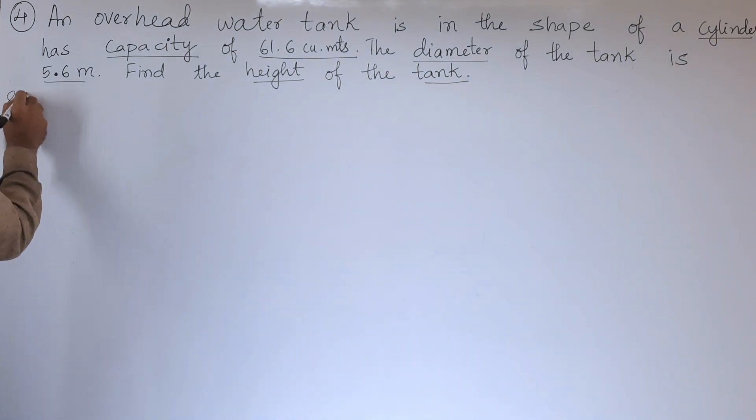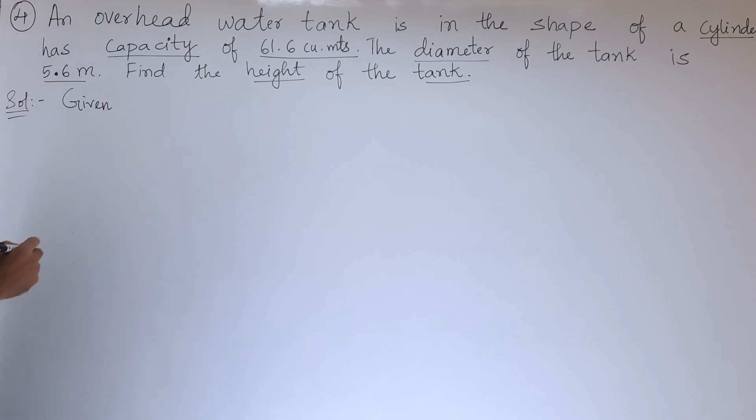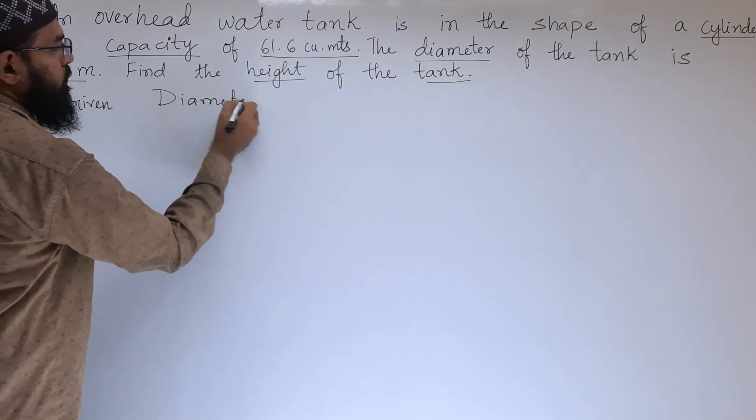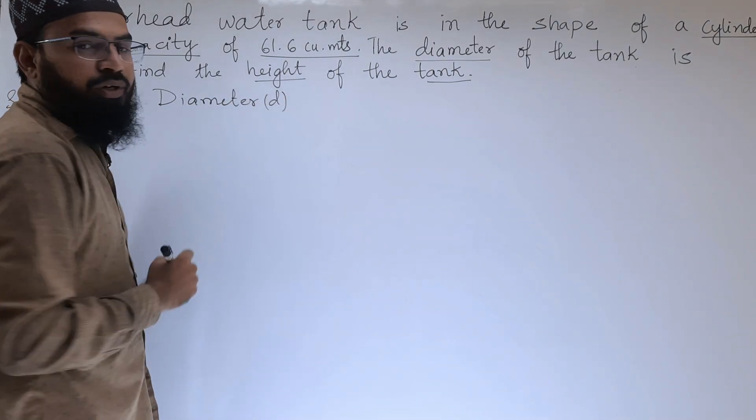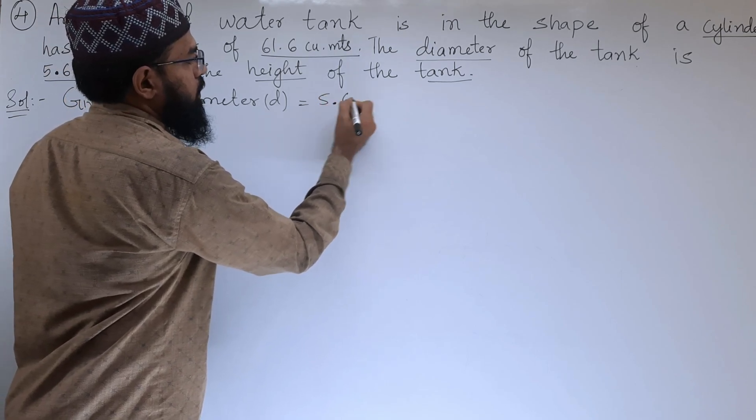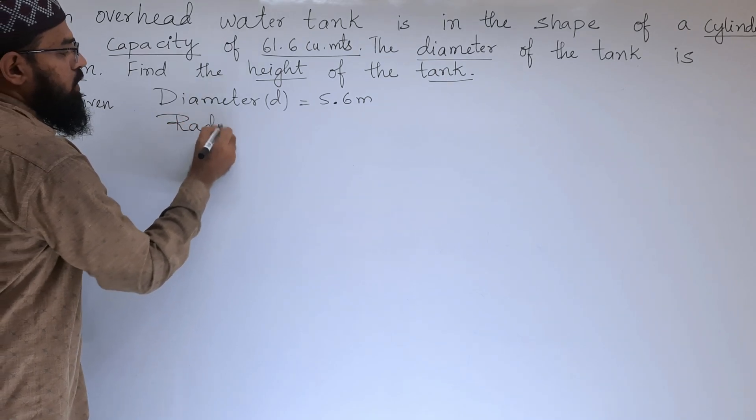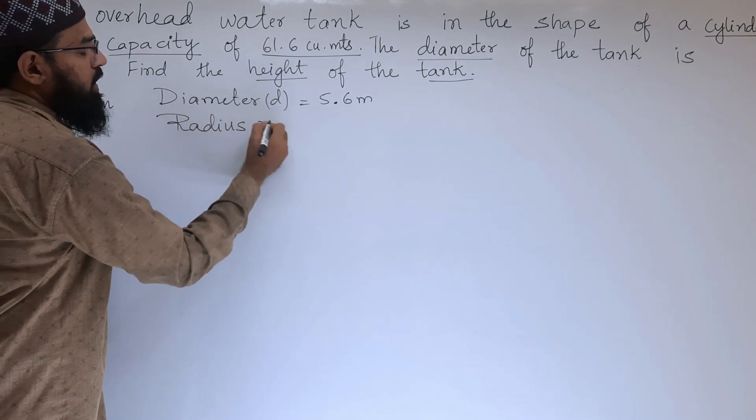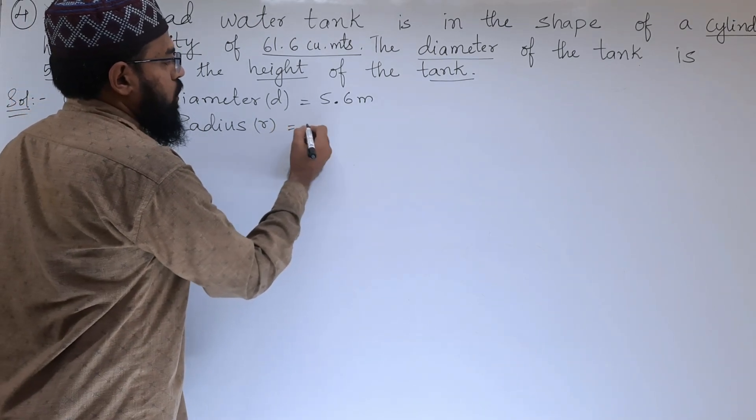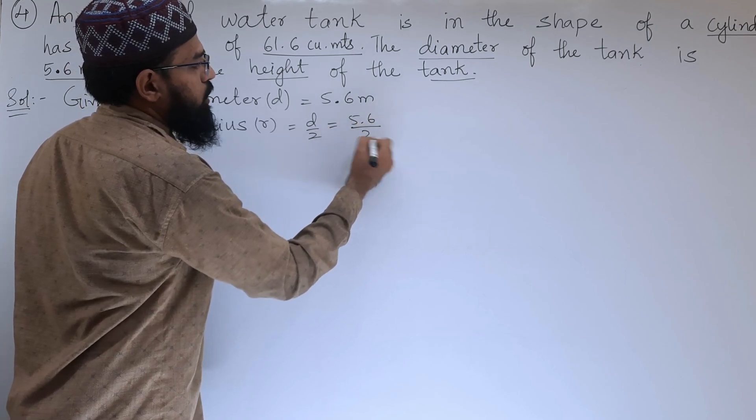In the solution, we will write what is given. Given: diameter, denoted by D, is equal to 5.6 meters. If we want to find out the radius, we know that radius is half of the diameter. So, D by 2 is equal to 5.6 by 2.